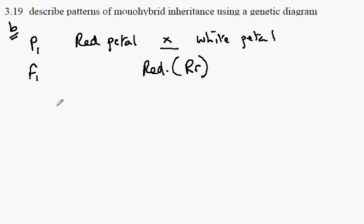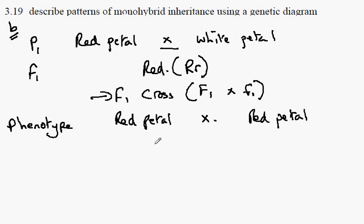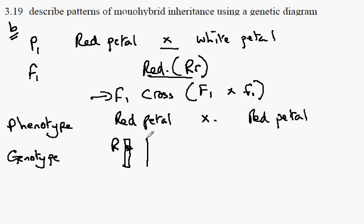In this demonstration, we are going to carry out an F1 cross, which involves reproduction between an F1 parent with an F1 parent. We begin by writing down the phenotype: a red petal plant crossed with another red petal plant from this generation. The genotype — the combination of alleles they would have — means one homologous chromosome carries the big R allele and the other carries the little r allele. This is the same for both parents: big R and little r.